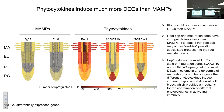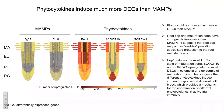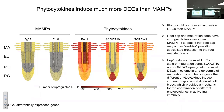This heat map shows the number of upregulated differentially expressed genes (DEGs) in each root cell type and root zone. The three phytocytokines could induce many more DEGs than the two MAMPs. For the two MAMPs, the root cap and the epidermis of the maturation zone show stronger immune responses than the meristematic and elongation zones, suggesting the root cap may act as a sentinel providing special protection to the root meristem. PEP1 induced most DEGs in the epidermis of the maturation zone, while SCOOP10 and SCOOP1 induced most DEGs in columella and epidermis of the maturation zone. This suggests that different phytocytokines induce immune responses in different cell types, providing a mechanism for coordination of immunity activation.